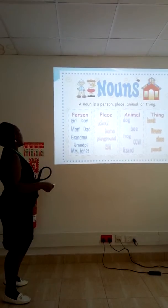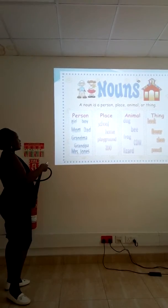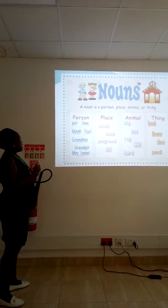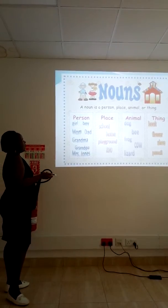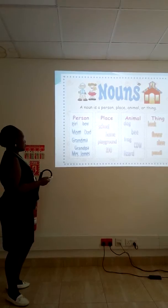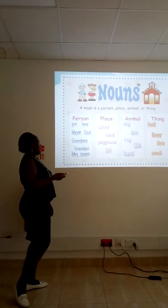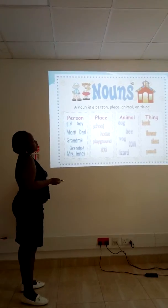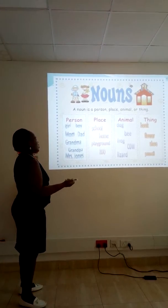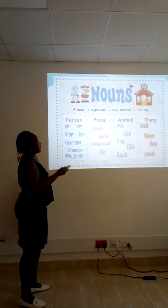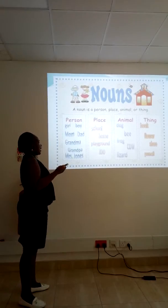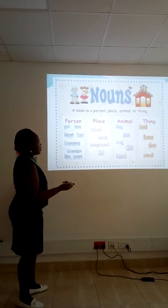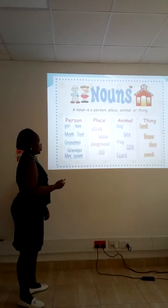For example, we have names used to refer to people like girl, boy, mom, dad. Then we also have names used to refer to places — an example is school, home, zoo. Other names used to refer to animals like dog, bee, frog. Then names used to refer to things like boots, flower, shoes.